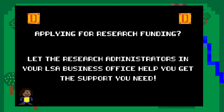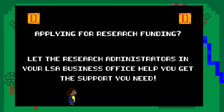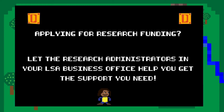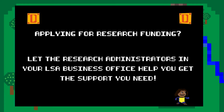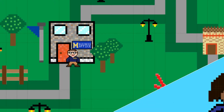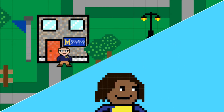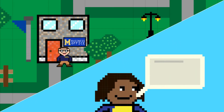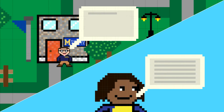So you want to apply for research funding. Are you wondering what is the best way to receive the support you need during the proposal process? Contact your department's business office — the sooner the better. Inform them of the proposal you would like to submit and they will guide you along the process.